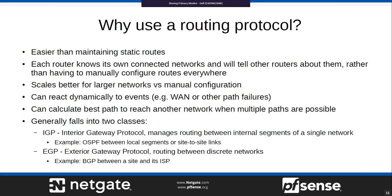Routing protocols fall into two classes. IGP — Interior Gateway Protocol — manages routes between internal segments of a single network, such as OSPF between local segments and site-to-site links, or IBGP between two internal routers. EGP — Exterior Gateway Protocol — handles routing between discrete or different networks, such as BGP between your organization and an internet provider or an external peer.